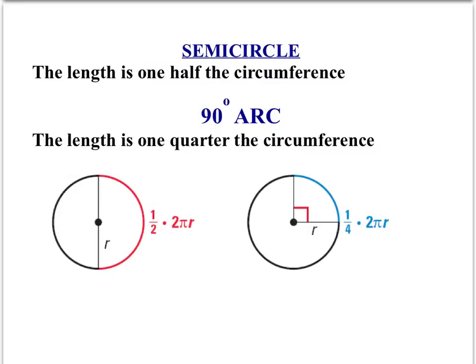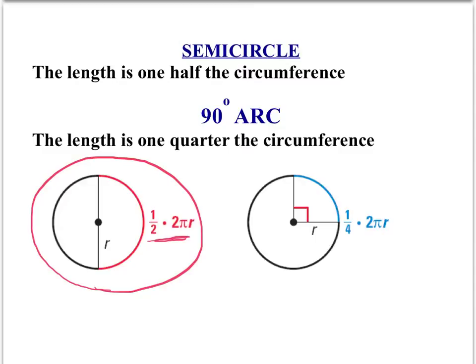A semicircle is the length of one half the circumference, and a 90-degree arc is the length of one quarter of the circumference. So on this diagram, the circumference of a semicircle would be half of 2πr, or πr. The length of a 90-degree arc would be one quarter of 2πr, or (π/2)r.